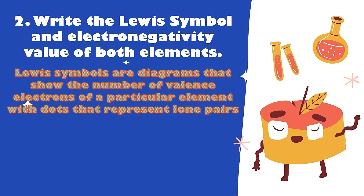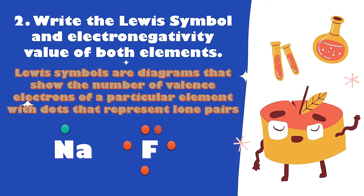Second, write the Lewis symbol and electronegativity value of both elements. Lewis symbols are diagrams that show the number of valence electrons of a particular element — they use dots to represent lone pairs. In writing the Lewis dot structure, always start in the upper part of the symbol. Sodium has 1 valence electron, so it is written like this. Fluorine has 7 valence electrons, so we start at the upper part and occupy each side before pairing up.